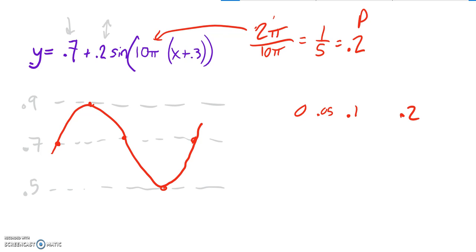So these jumps will be by 0.05. So this will be 0.15 and then 0.2. Still going from there. Now I need to shift everything and it gets shifted to the left 0.3. So what I'm going to do is subtract 0.3 from everything. So 0 minus 0.3 is negative 0.3. 0.05 minus 0.3 is negative 0.25. This is a negative 0.2. This is going to be a negative 0.15. And this is going to be a negative 0.1.